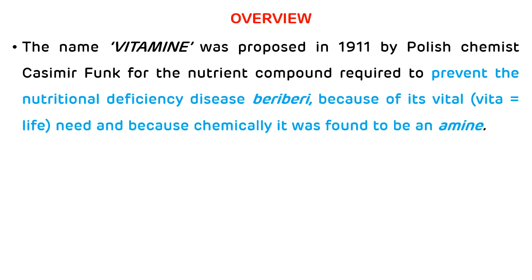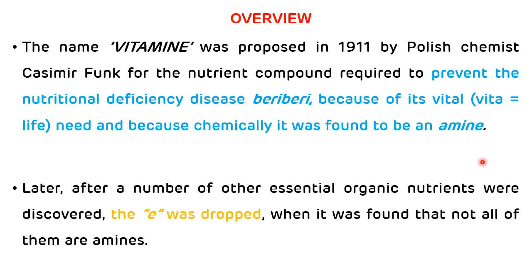The term 'vitamin' — that is 'vital' plus 'amine' — was proposed in 1911 by Polish chemist Casimir Funk for the nutrient compound required to prevent the nutritional deficiency disease beriberi, because of its vital need and because chemically it was found to be an amine. Later, a number of other essential organic nutrients were discovered.